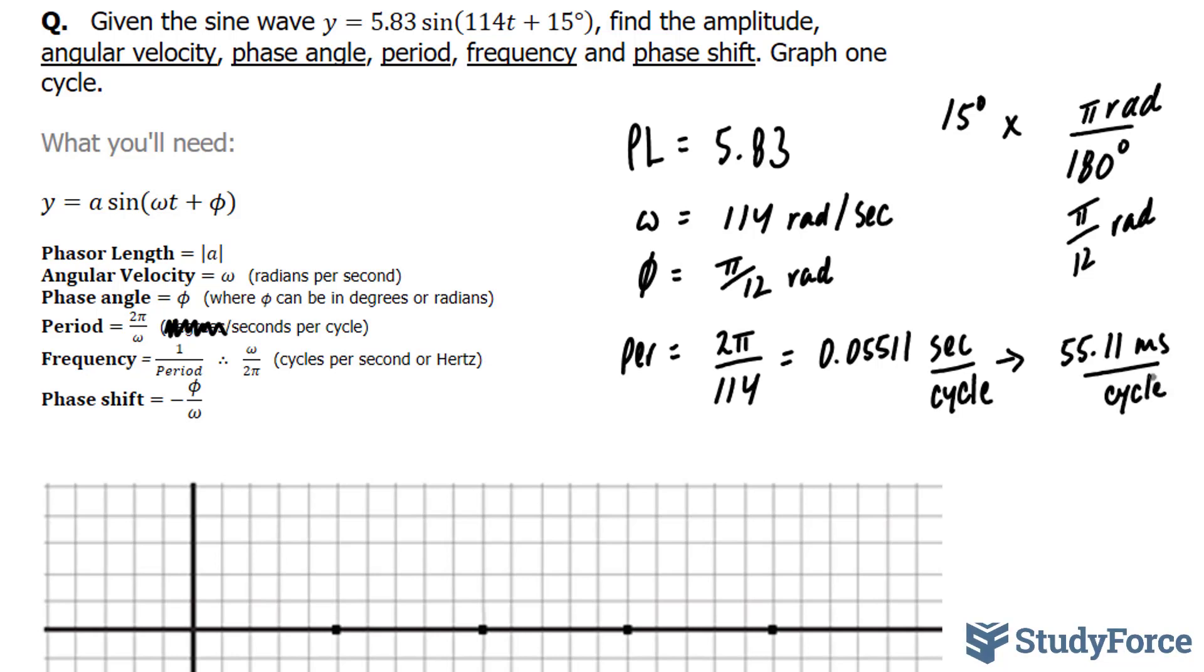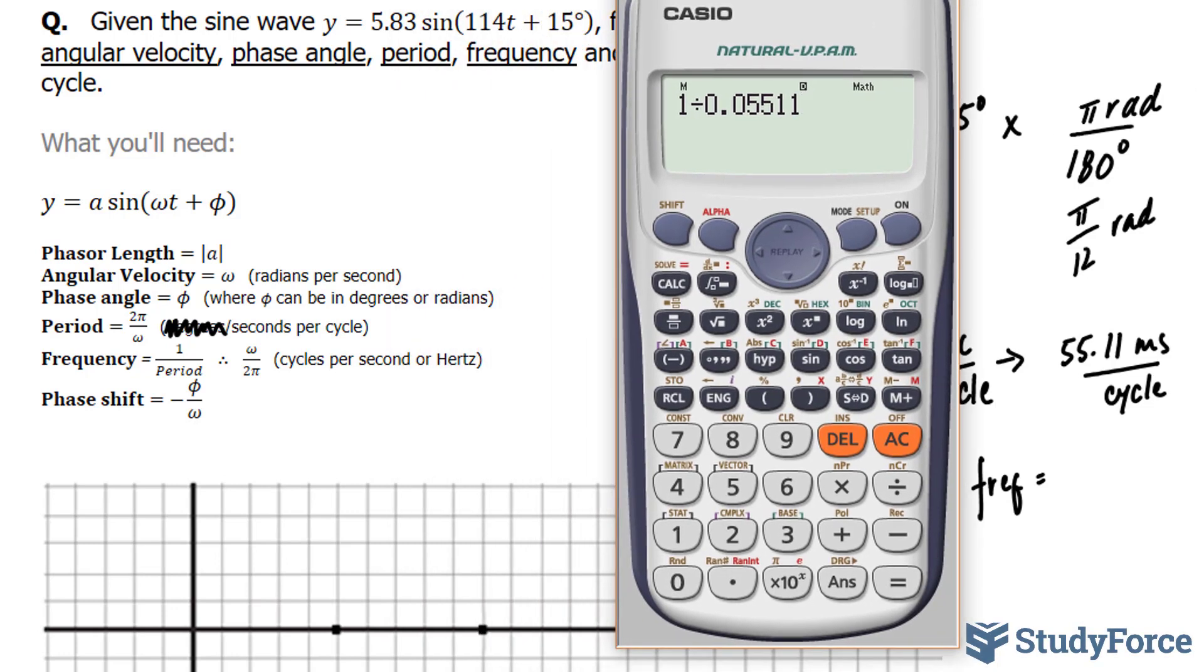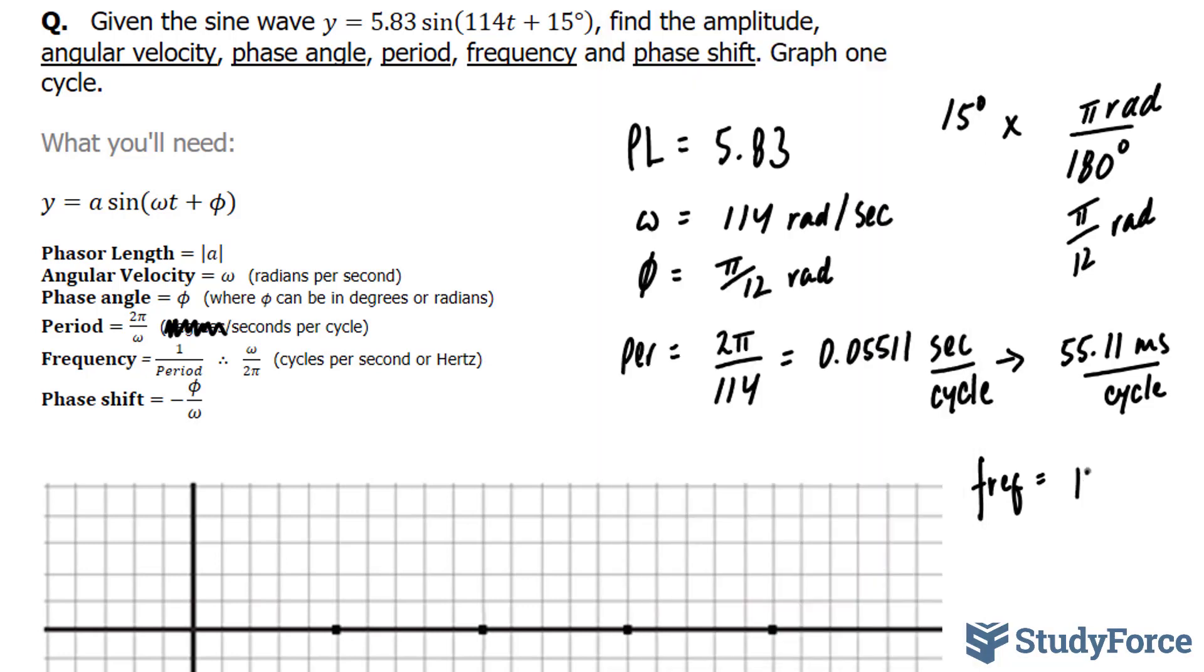The next feature is frequency, and frequency is not hard to do. All you have to do is flip the following number. It's the reciprocal of period. So our frequency is 1 divided by 0.05511. Notice that frequency is in cycles per second, so we can't use the millisecond version. We get 18.14, 18.14, I'll use hertz.